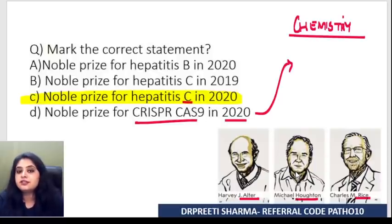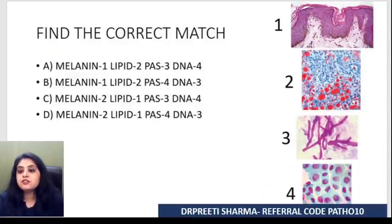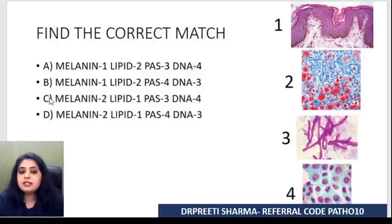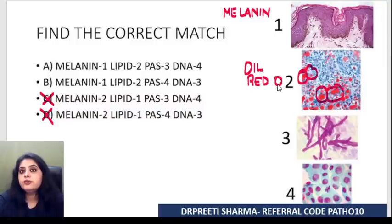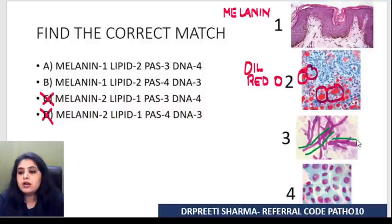Next is a match-the-following with four images and corresponding stains. The first image looks like skin with a brown color pigment — that has to be melanin, so the first one is melanin. For the second image, I see red globules. Knowing oil red O stains lipids red, and PAS gives pink rather than red, the second one is oil red O for lipids.